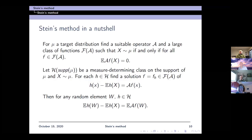So this was just the normal distribution. In general, if mu is a target distribution, we find a suitable operator A and a large class of functions f of A, such that x has distribution mu if and only if for all f in this class of functions capital F, the expectation of A f of x is equal to zero.